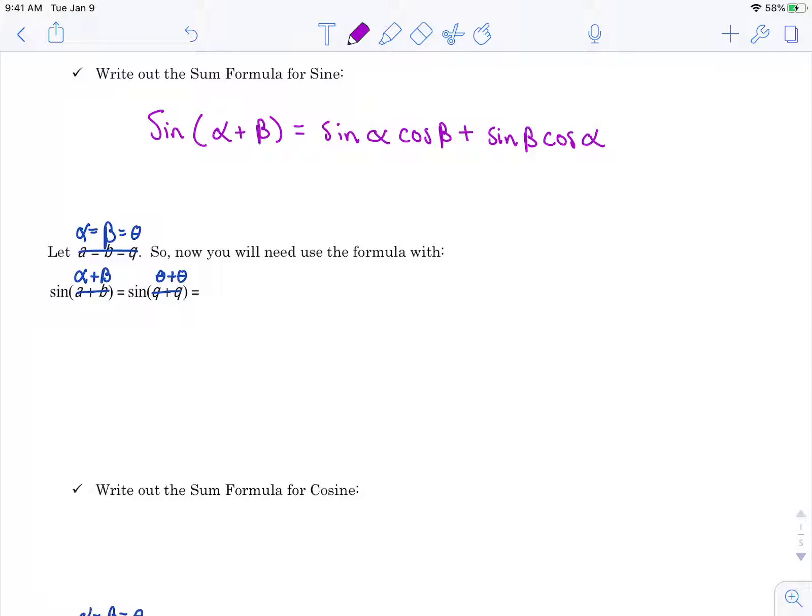For whatever reason when I downloaded these notes my software changed the variables on me so I just had to cross them out and make them what they are on your notes. So I'm claiming that alpha and beta are the same, so then I'm just going to name them something different, they're both just two thetas. So I am going to go ahead and fill in where I see my alpha and my beta, they're going to be thetas.